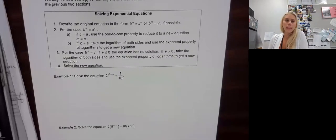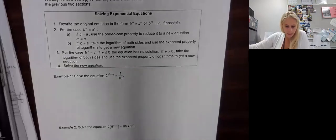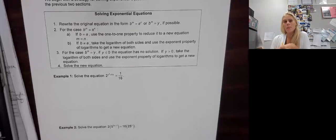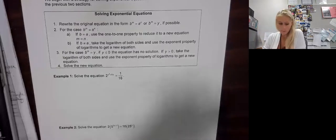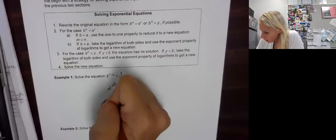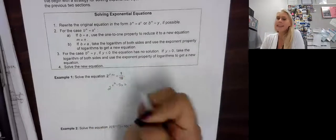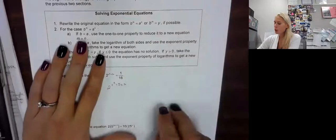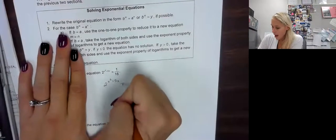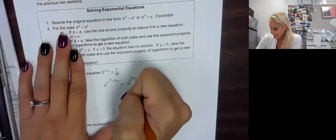So first we have example one. Solve the equation 2 to the x squared plus 5x equals 1/16. So right now, what I want to think about is having the same base. If you think about this, 2 to the x squared plus 5x stays the same. And 16 is 2 to the 4th. But because it's a fraction, we have to remember a fraction makes a negative exponent.